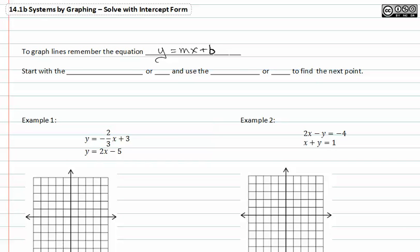We start with the y-intercept or b, this part right here. And use the slope or m to find the next point. As you may recall, m is equal to rise over run when looking at a line on a graph.